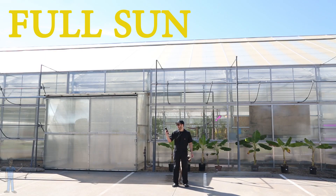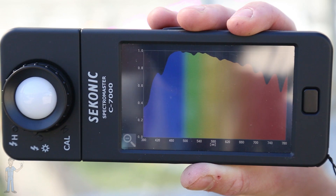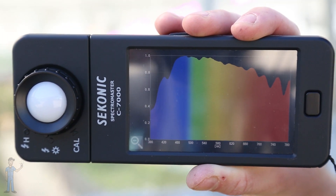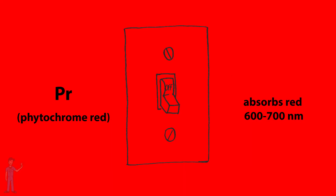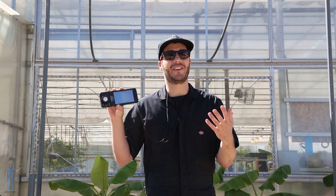In full sun there's a lot of red light, and this red light turns PR into PFR, the active form. One of the common phytochrome-regulated processes observable in full sun is the inhibition of stem elongation, which pretty much just means you get a short plant.